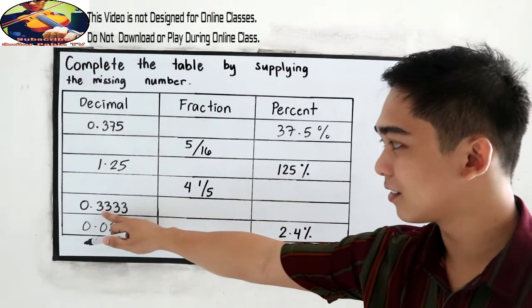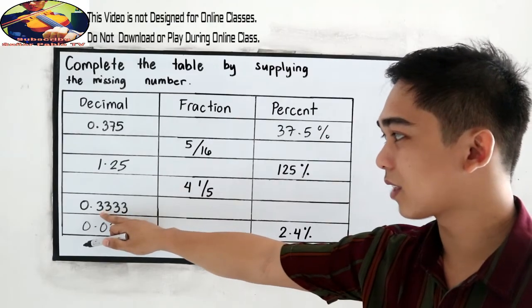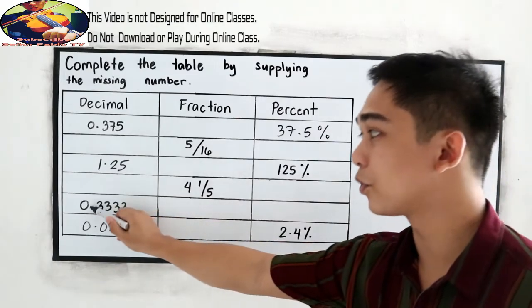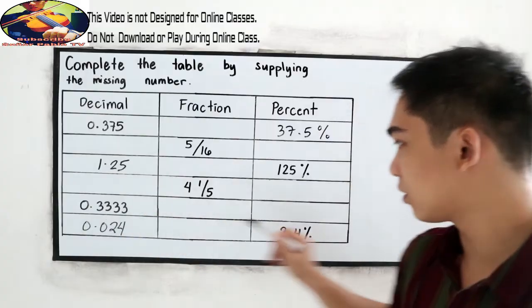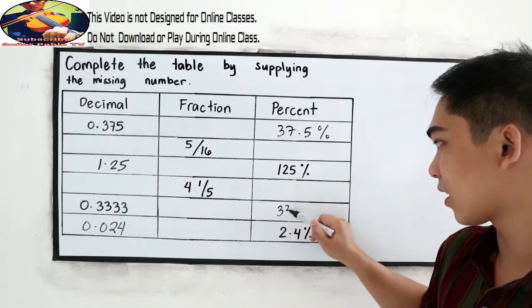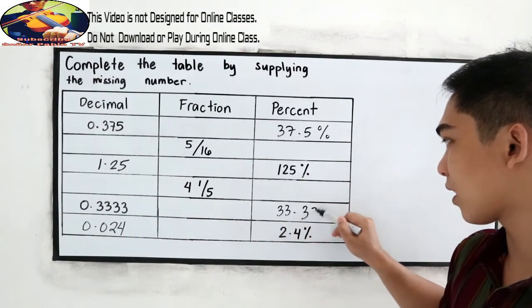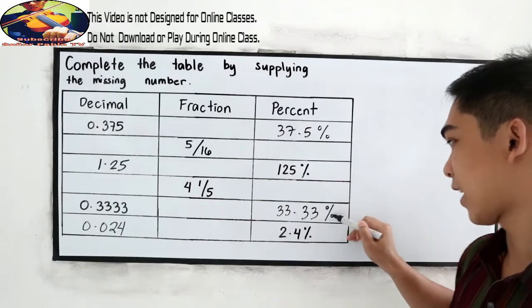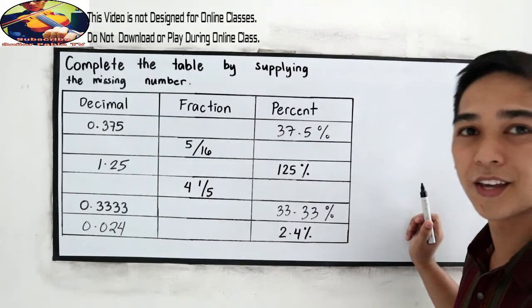Also here, 0.3333. Move two decimal going right. 1, 2. So that is 33.33 percent.